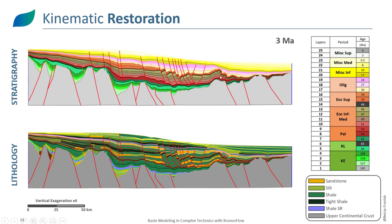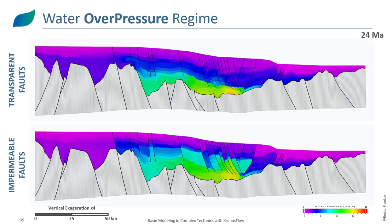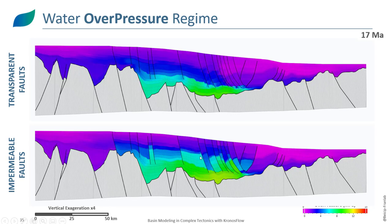From 30 million years to present there is simple burial. In terms of pressure, we focus on overpressure at 34 million years under two scenarios. In the first, faults are transparent — only the juxtaposition of layers on both sides of the fault impacts water flow. In the second, faults are totally impermeable — preventing any flow between fault blocks.